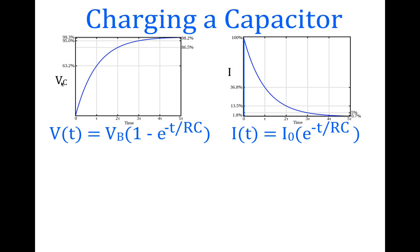This graph is a graph of the voltage across the capacitor with respect to time. This graph is a graph of the current through the circuit with respect to time. You should notice that the time in each case — for the voltage and for the current — is not expressed in minutes or seconds or some absolute time; it's simply expressed in time constants: one, two, three, four, five.